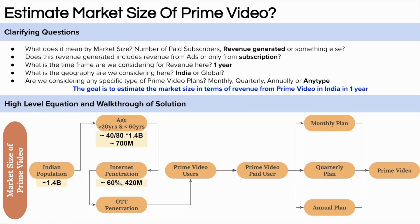Not all people aged 20 to 60 with an active internet connection will watch OTT platforms like Prime, Netflix, or Hotstar. Let's assume 50% of those 420 million watch any OTT platform — that gives around 210 million people. But not everyone will watch Amazon Prime specifically. Let's assume 40% of those 210 million watch Amazon Prime, giving around 84 million Amazon Prime viewers in India. In India, people share accounts, so not everyone buys a subscription. Let's assume on average 4 viewers share one paid subscription. That gives around 21 million paid subscribers in India.